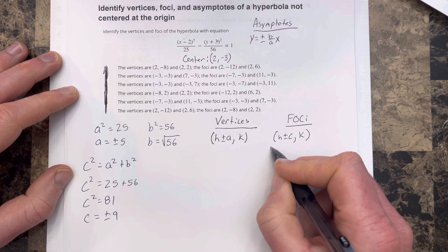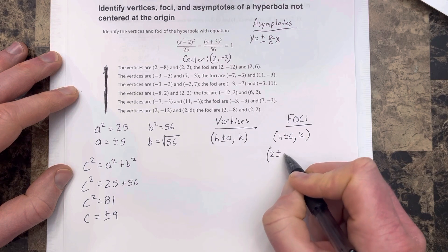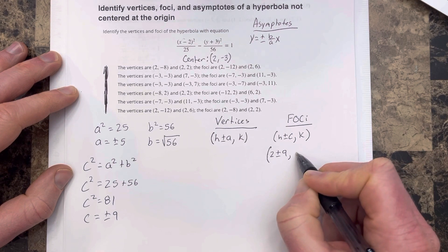So this tells us for the foci, we're going to have h, which is 2, plus minus 9, comma k, which is negative 3.